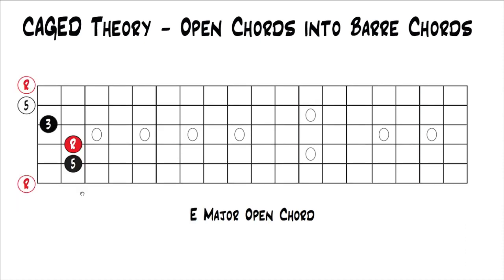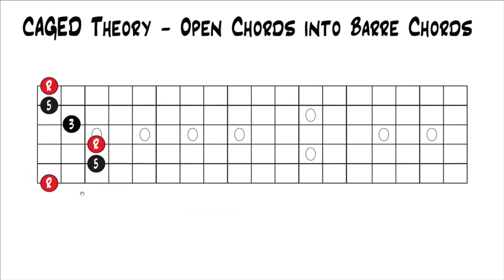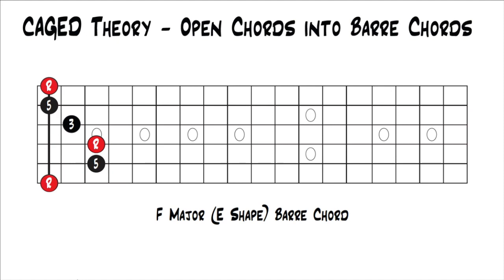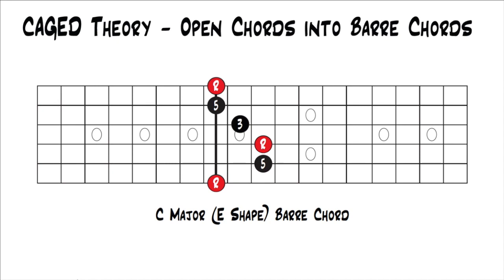The next one is E — so we've gone C, A, G, now we're on E. We take the E major chord, move it up half a step, and if you bar those notes it becomes an F major barre chord using the E shape. This is a really common barre chord, just like the A shape — if you know your barre chords, you know this one already. It's used all the time and easy to play once you get barre chords down. Now it's movable — move it up to the eighth fret and you have a C major barre chord using the E shape.